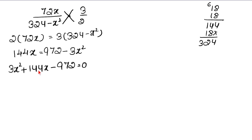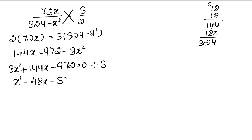The entire equation is divisible by 3. Dividing through by 3: x² plus 48x minus 324 equals 0.